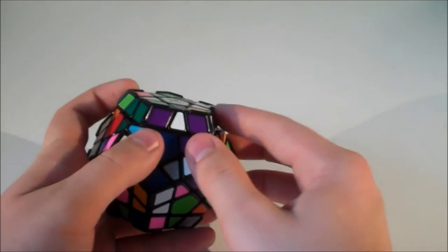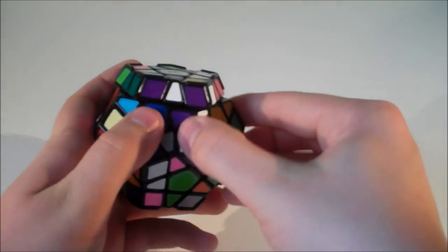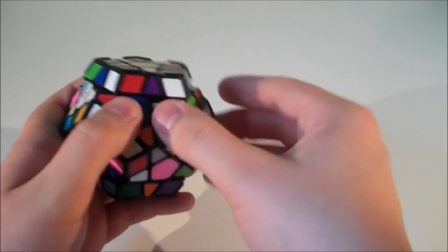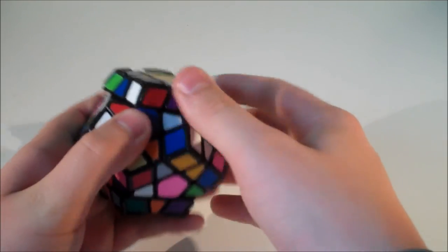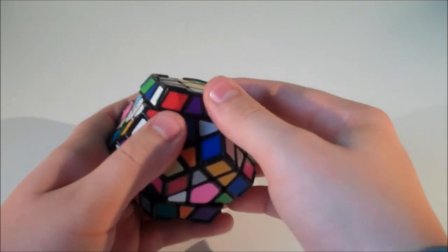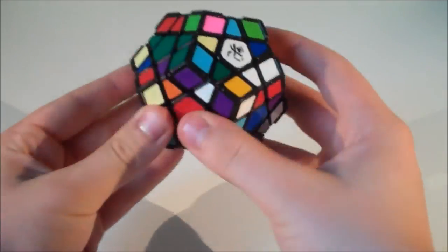One thing I should check is corner cutting. So at the moment it doesn't look like it can corner cut. Oh yeah, yeah it can. It was just one face. Wow, so corner cutting is quite impressive actually. And it is quite tight as well. Anyway, that's the cube scrambled.